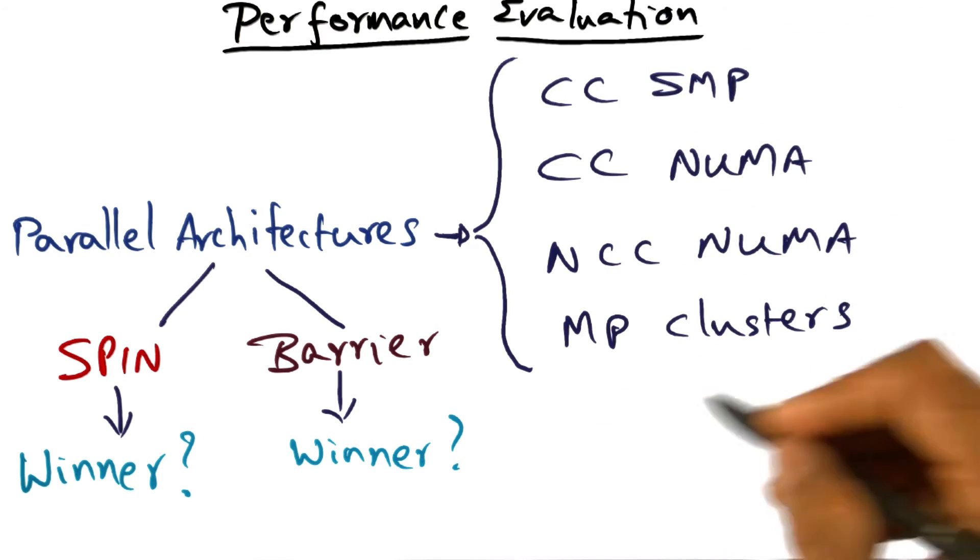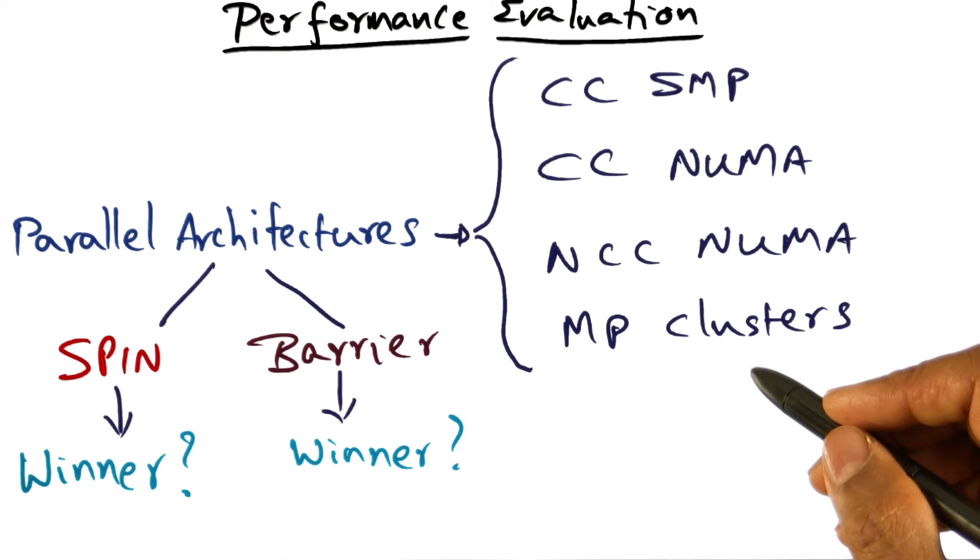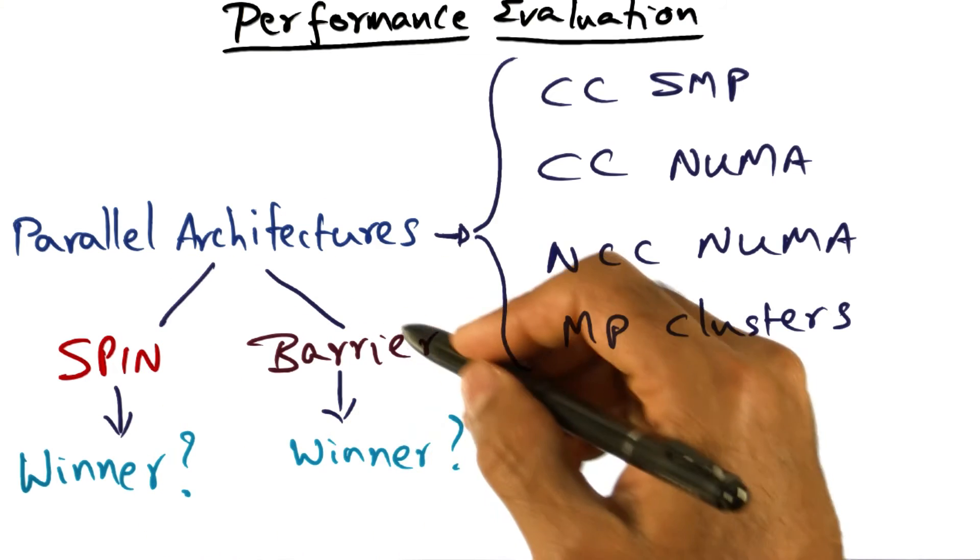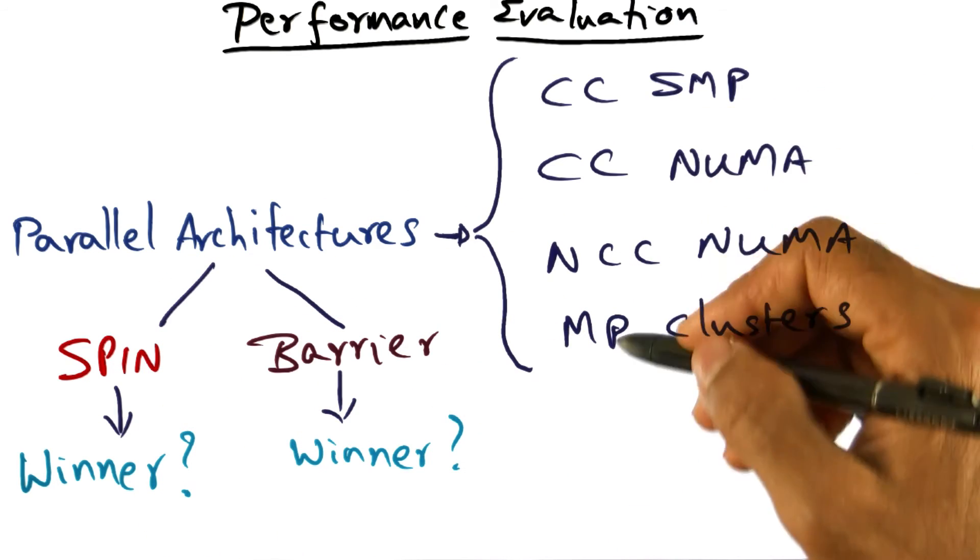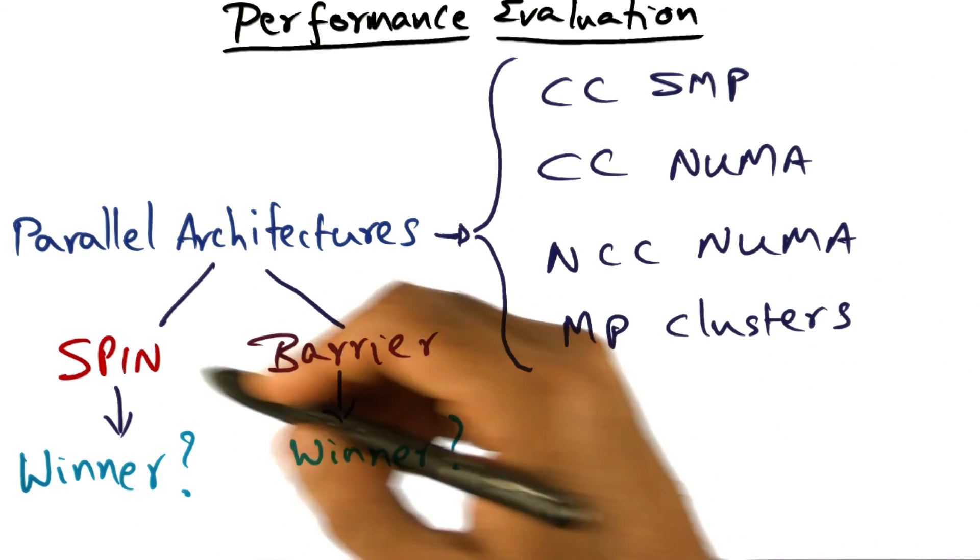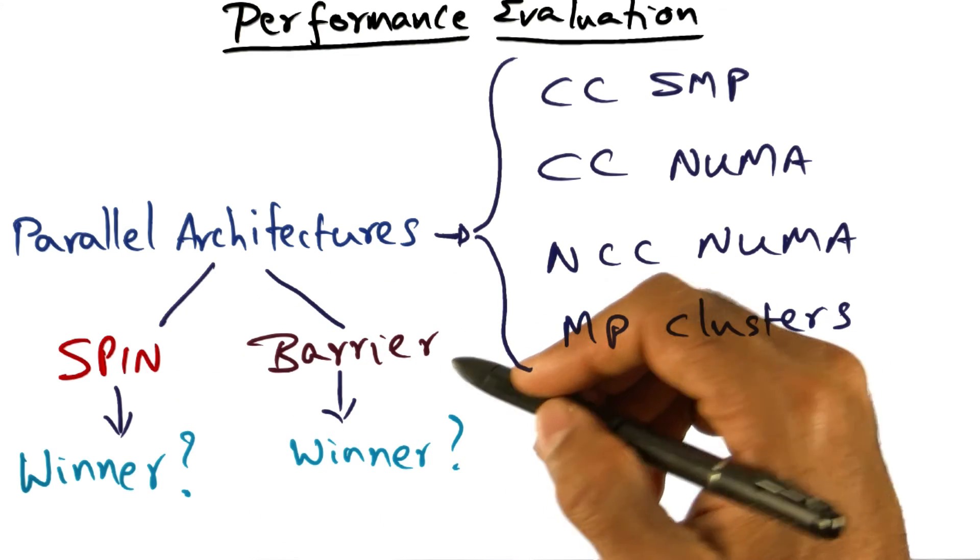Because these styles of architectures that I mentioned to you, they're still relevant to this day. And therefore, what you want to ask is the question, these different types of spin algorithms and barrier algorithms, when you implement them on different styles of architectures, which one of those algorithms are going to be the winners?